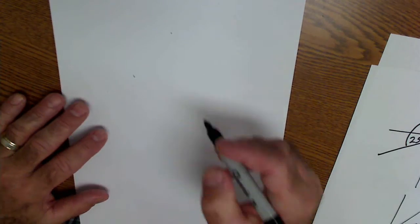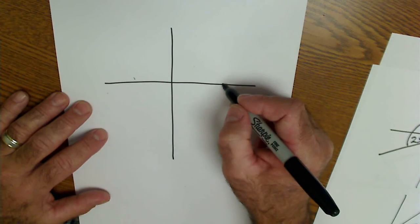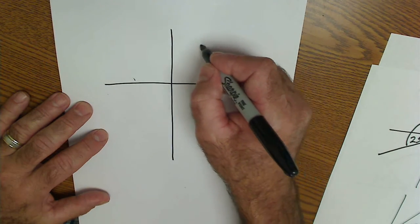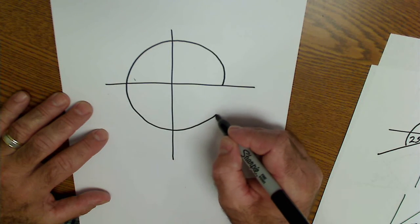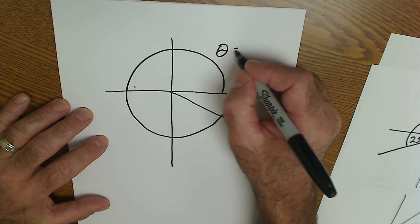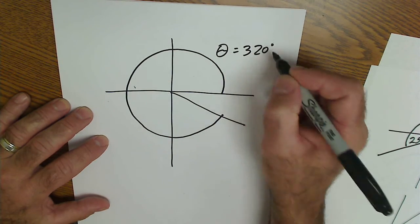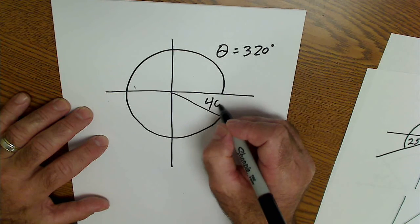And lastly, let's take a look at a fourth quadrant value. Let's say I rotate from here, counterclockwise, 90, 180, 270, 320. So if my angle theta is 320 degrees, my reference angle is how far is it up to the x-axis, 40 degrees.